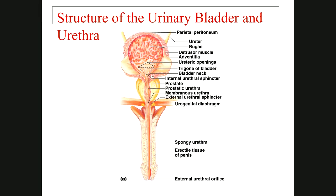Beneath the bladder in the male, we have the prostate gland, which encircles the urethra from outside. The part of the urethra passing through the prostate gland is called the prostatic urethra. After that, the urethra passes through the wall of the body — this part is called the membranous urethra. Then the urethra is located in the penis, called the penile urethra or spongy urethra. So there are three different parts.